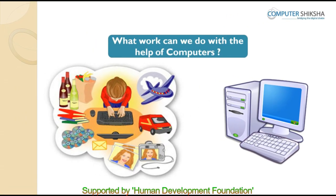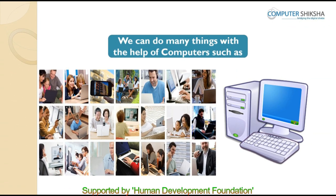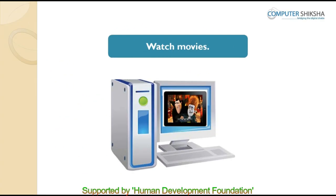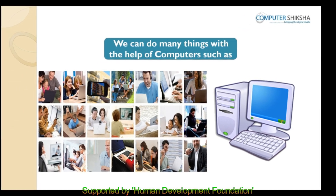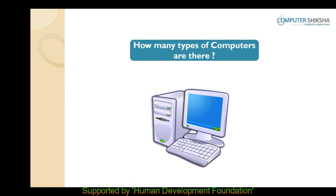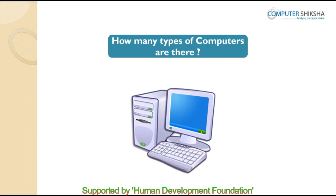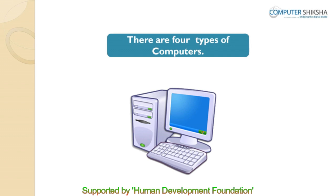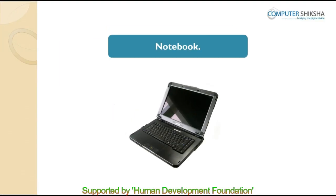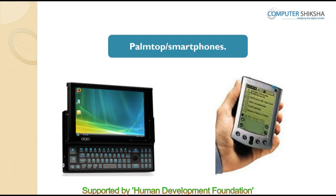What work can we do with the help of computers? We can use the computer to do many things like listening to songs, playing games, watching a movie, and there are plenty of other things too. How many types of computers are there? Computers are of four types: desktop computers, laptops, notebooks, and palm tops or smartphones.